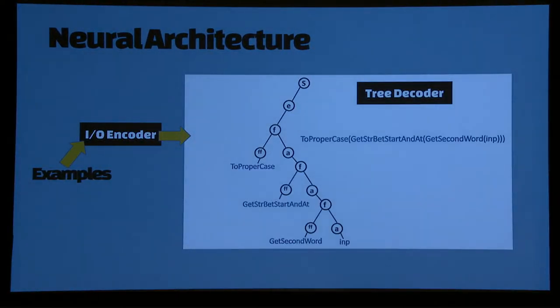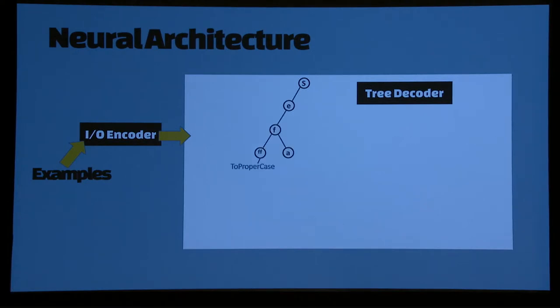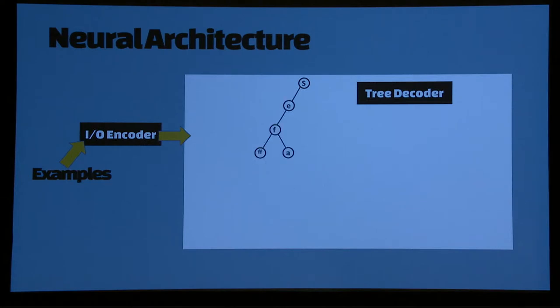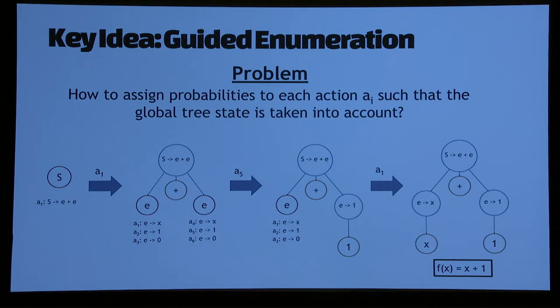At high level, the architecture would look something like this. We will have two systems in our architecture. One would be an example encoder that encodes the set of examples users provided. Then we'll have a decoder that writes program, in this case incrementally one node at a time. One very high level way to think about this model is something like, you can think of programming language as some kind of a context-free grammar. Essentially the network is learning a search strategy over it. It's learning at any time, what is the rule to expand, and what's the probability to guide the search to get to a program.